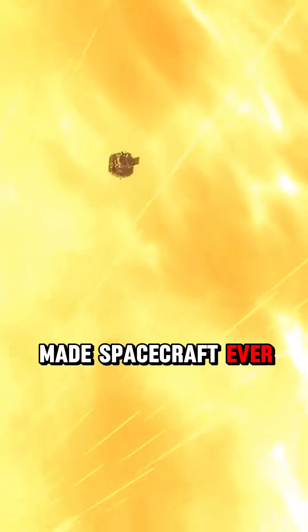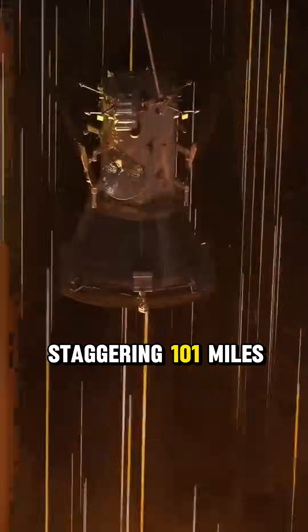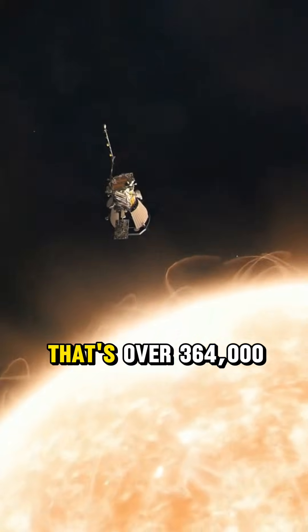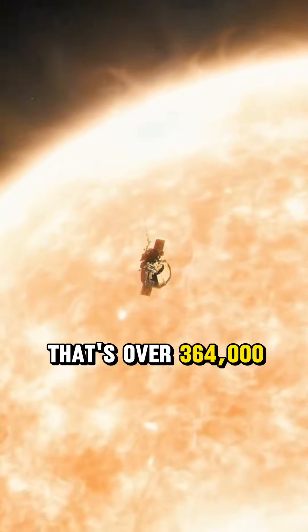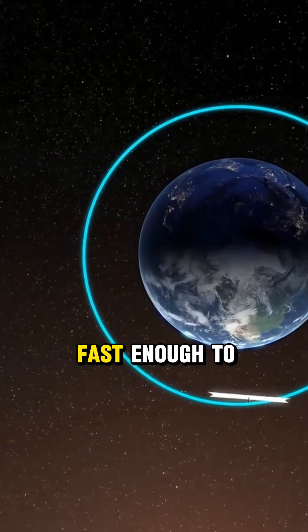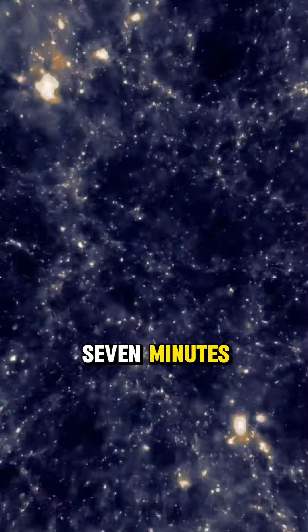The fastest man-made spacecraft ever built travels at a staggering 101 miles per second. That's over 364,000 miles per hour, fast enough to circle the entire Earth in less than seven minutes.